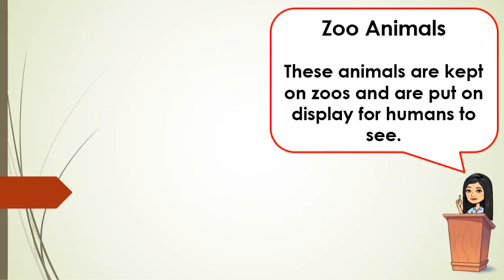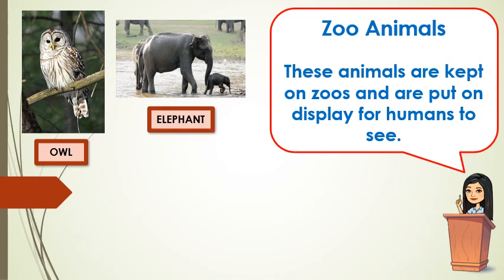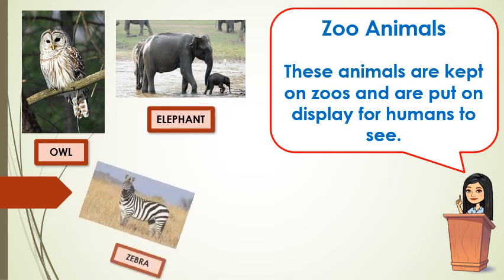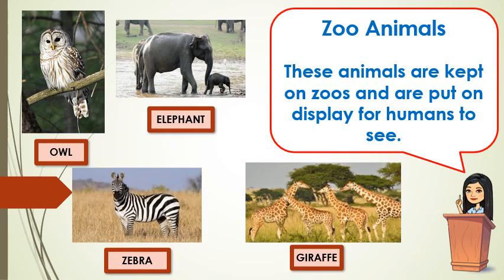We also have the zoo animals. These animals are kept in zoos and are put on display for humans to see — just like the owl, elephant, zebra, and giraffe. Can you name other zoo animals?